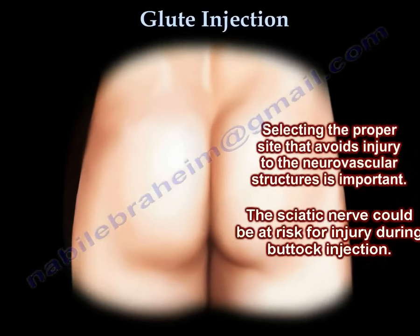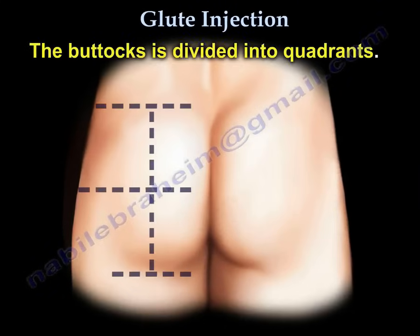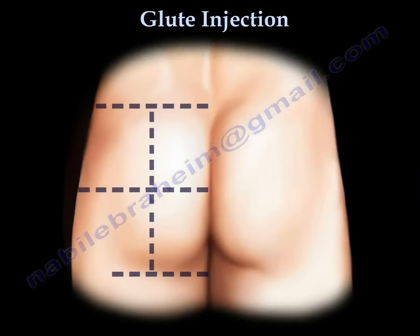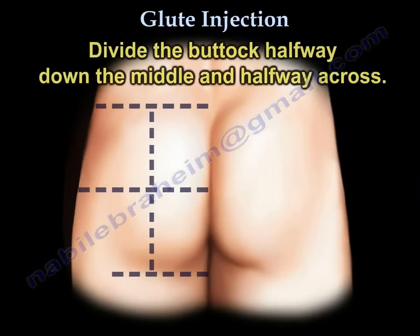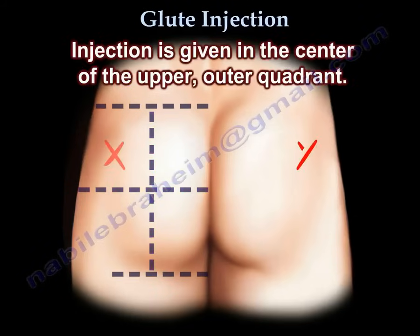The buttock is divided into quadrants. Divide the buttock halfway down the middle and halfway across. The injection is given in the center of the upper outer quadrant.